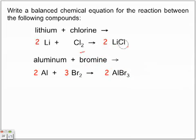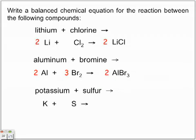The last quick example is potassium plus sulfur. Potassium is K, sulfur is just S. We combine them — again metal and non-metal — using the five-step crossover rule, and we get the formula K₂S. To balance this one, simply place the number two in front of potassium on the reactant side.